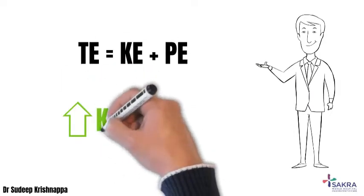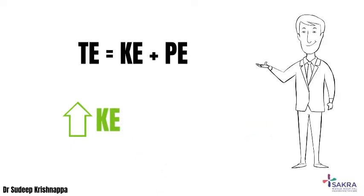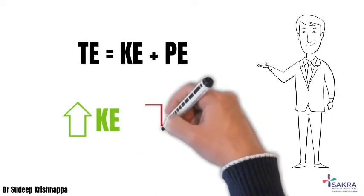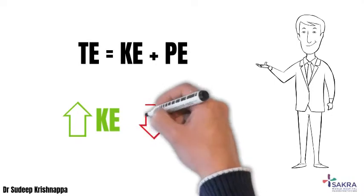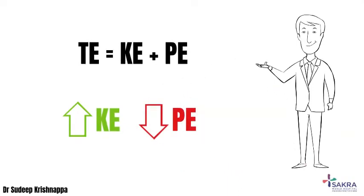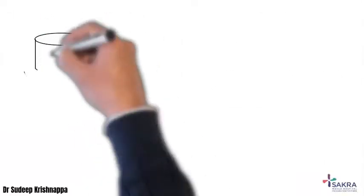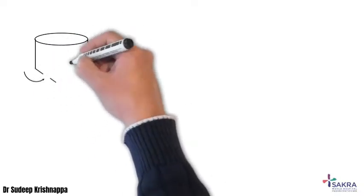The velocity of flow of the system would represent the kinetic energy, and the pressure the system exerts on its sides would represent the potential energy. If for some reason the kinetic energy increases, the potential energy has to decrease in order to keep the total energy of the system constant.